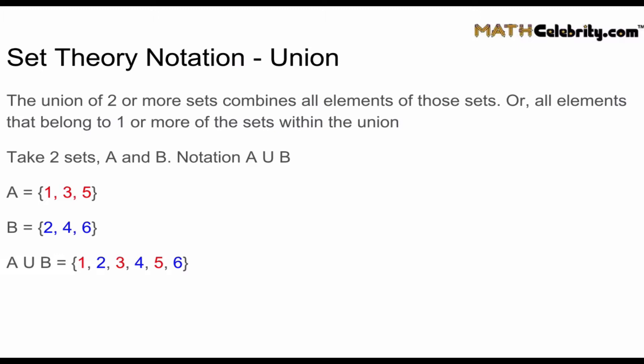Now it's worthy to note if A and B both contain the same number, let's say they both had seven, you only include seven once in the union. So you want unique elements contained within all the sets within the union.